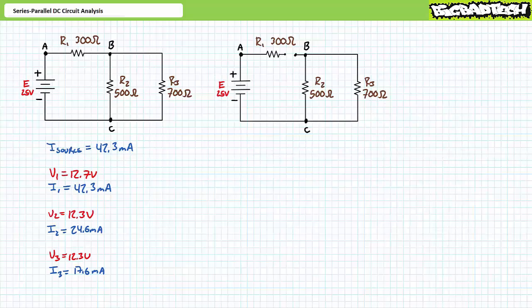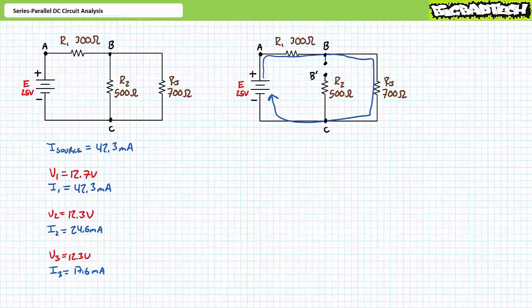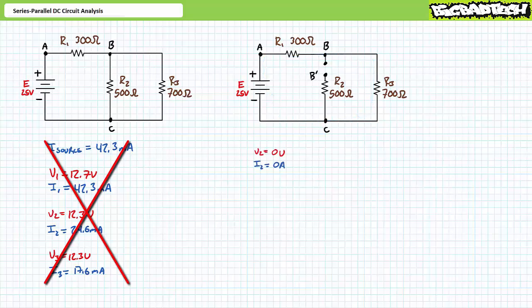Consider an open circuit between R1 and the parallel combination of R2 and R3. This type of open has disrupted current flow through the whole system — no current flows through and no voltage is dropped across any individual element; all voltage will be dropped across this open. Opens in series-parallel circuits needn't be as dramatic. Consider one lead of R2 dangling out in space — R2 has been effectively removed from this circuit. However, current continues to flow through R1 and R3, now in a series configuration. The opening of R2 has fundamentally changed the nature of the series-parallel circuit and all of our previous analyses are invalid.